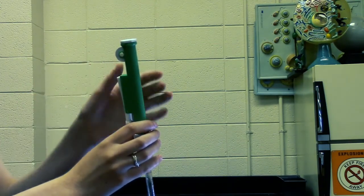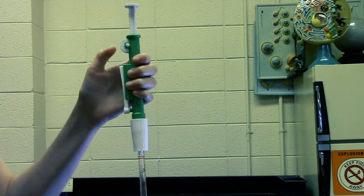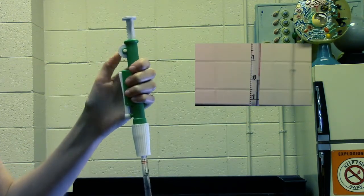This pipette has a roller on the side that you use your thumb to control. Moving the roller downwards takes in the liquid and moving it up releases it.